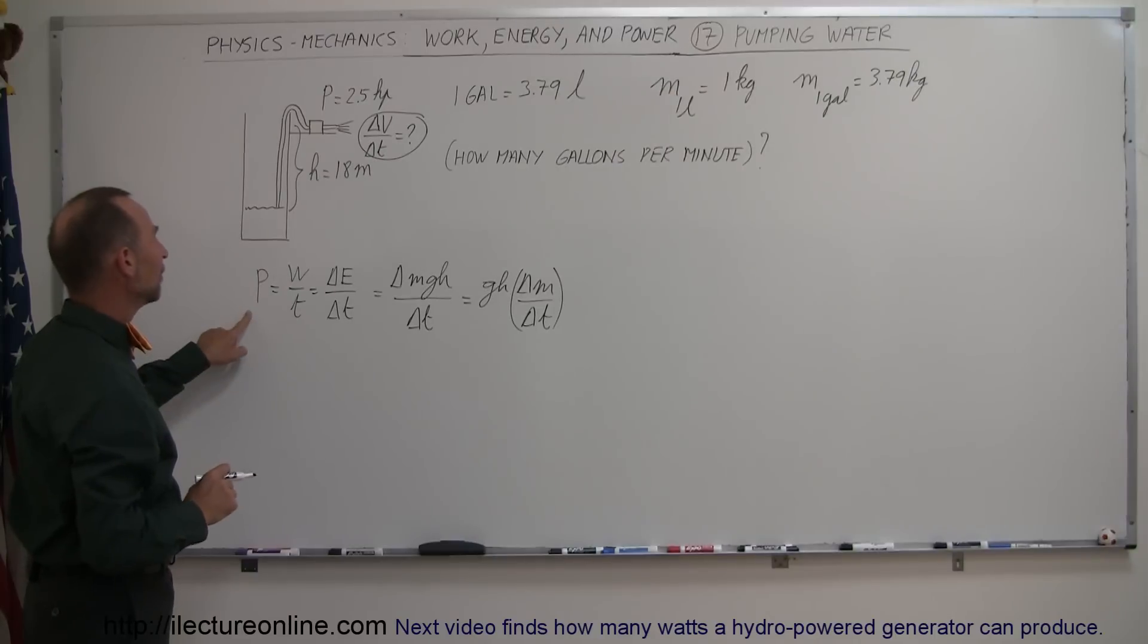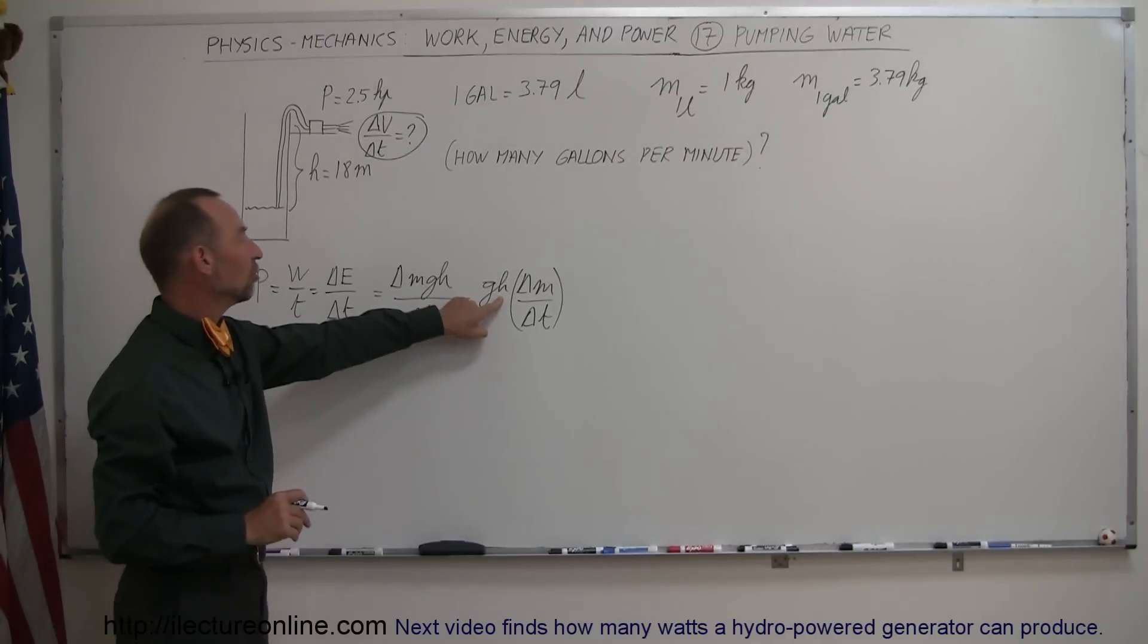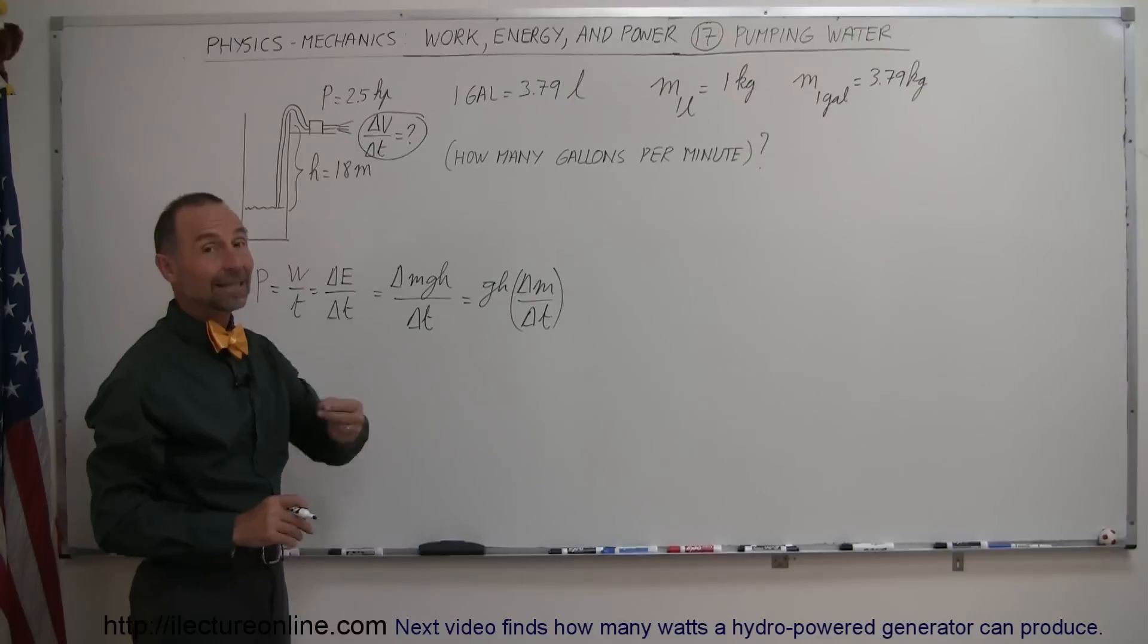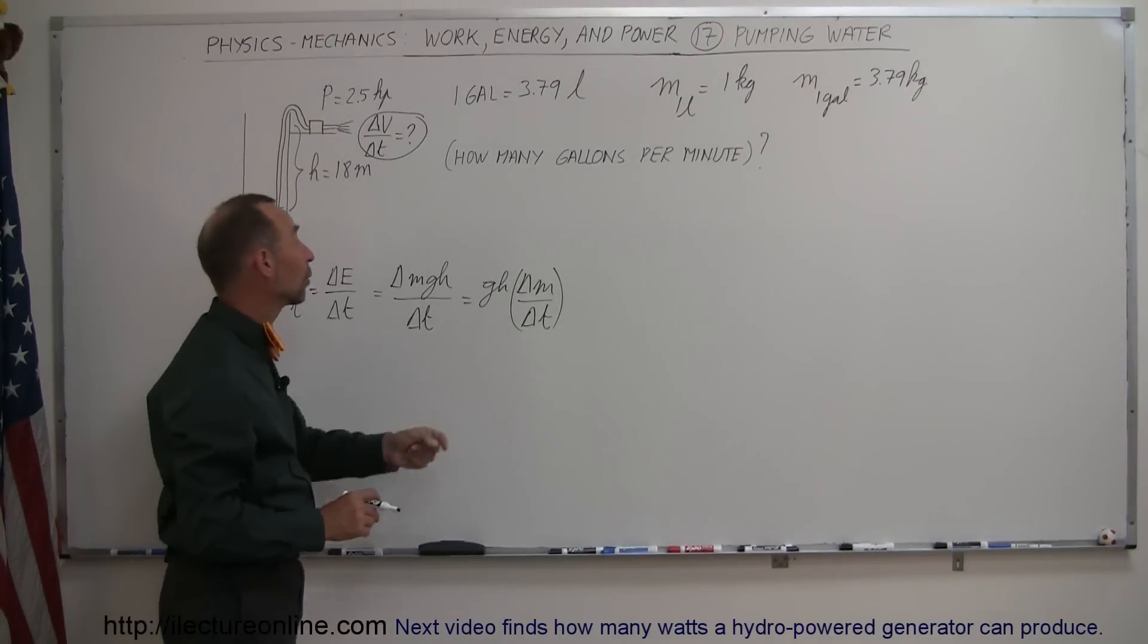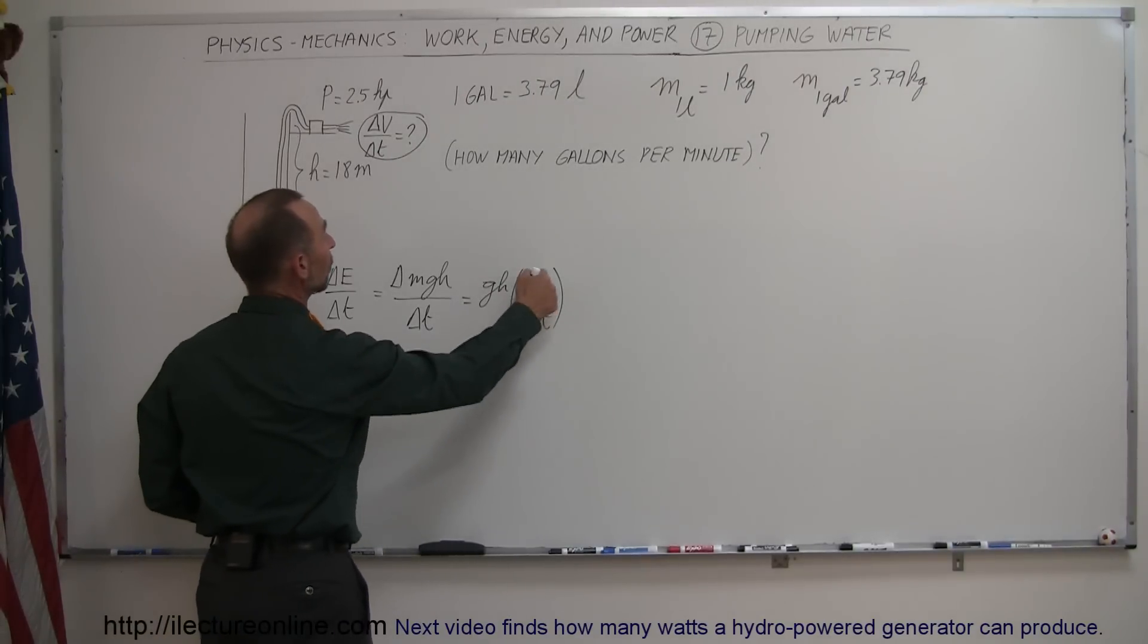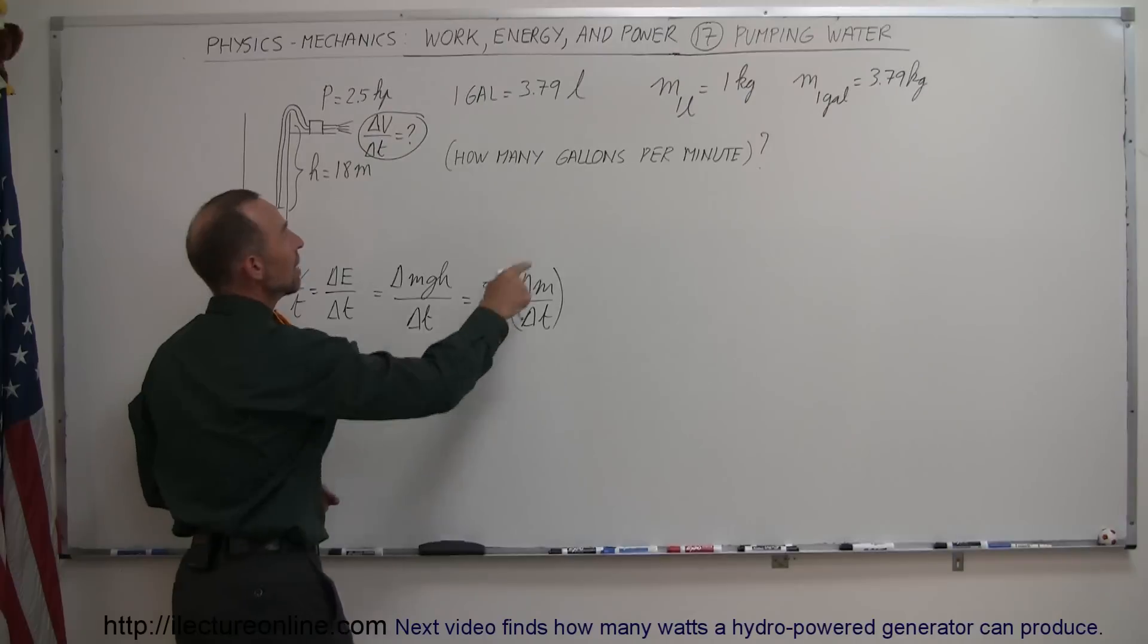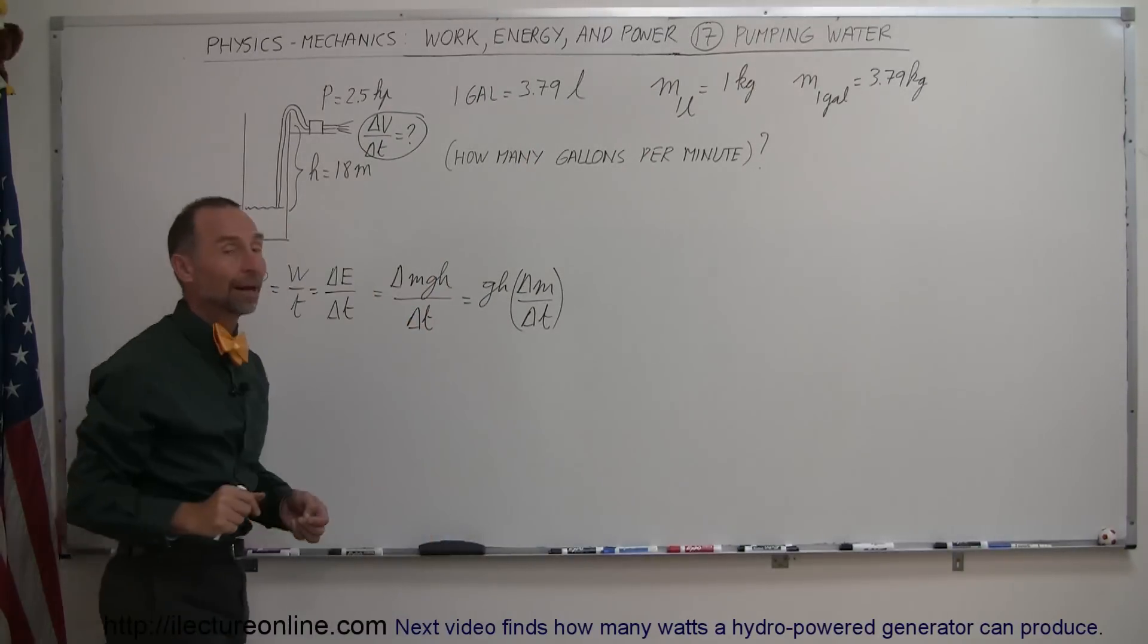The power is given, G is known, H is known, the delta M delta T, that is what we're looking for. So there will be the question mark. Once we know what this is, we'll convert that to delta V delta T using that relationship right there.